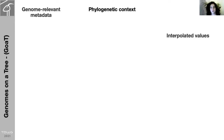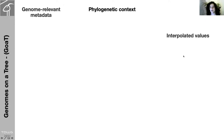Three main features make GOAT a very powerful resource as a database. First, it stores genome-relevant metadata that can be searched. Second, the information is stored in a phylogenetic context, and based on the stored information, it can handle missing values and create estimates in a biologically meaningful way.